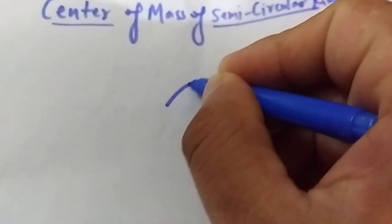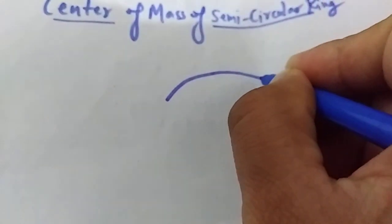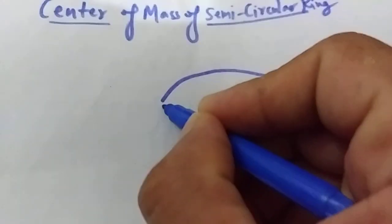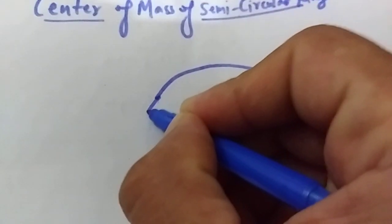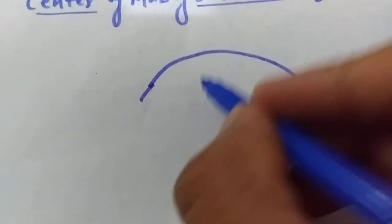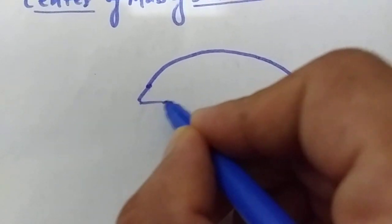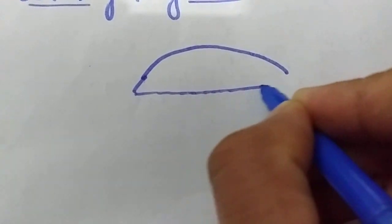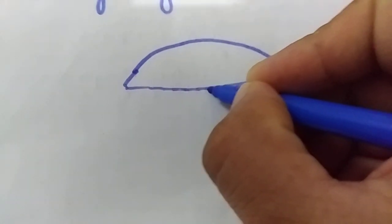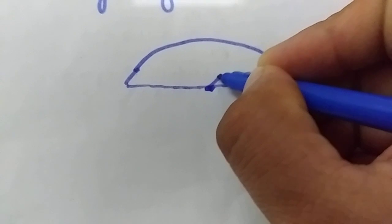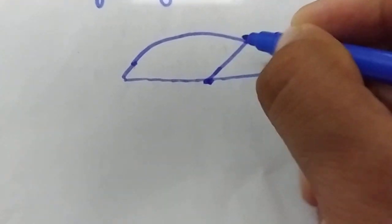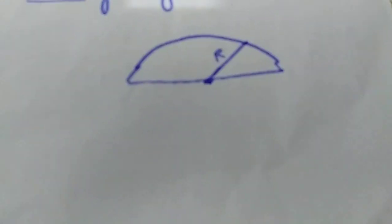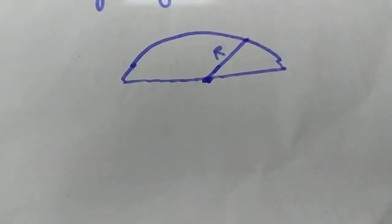Let's make a semi-circular ring here. This is the semi-circular ring and it is having radius capital R. I have made a semi-circular ring — its radius is capital R — and I have to find its center of mass.